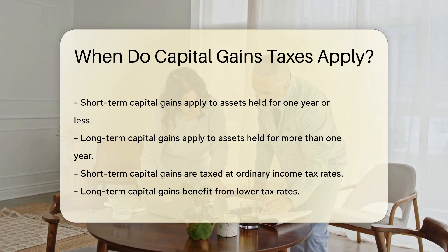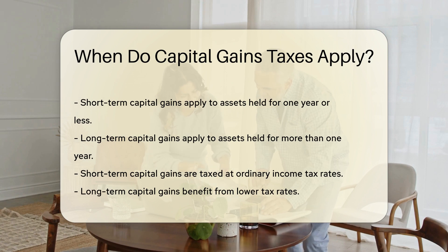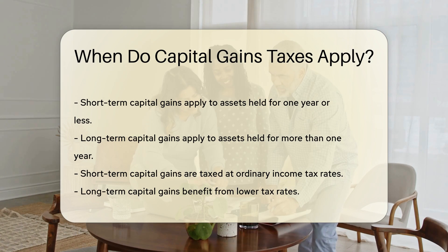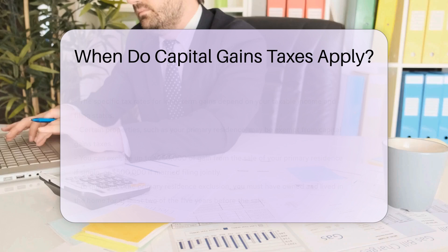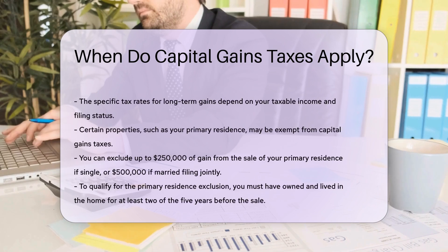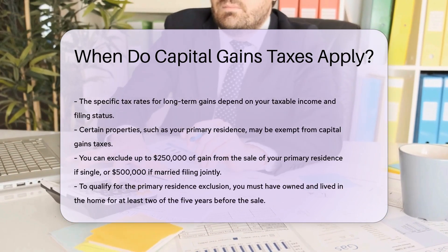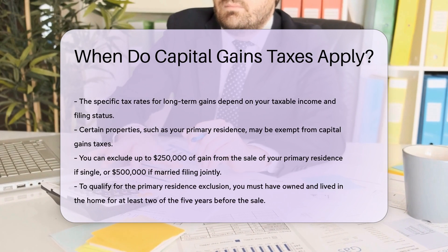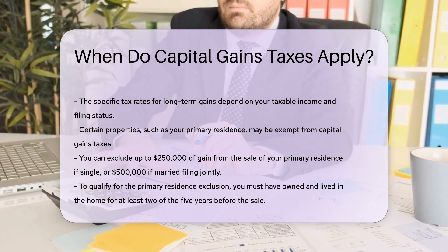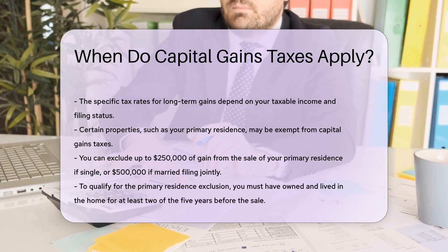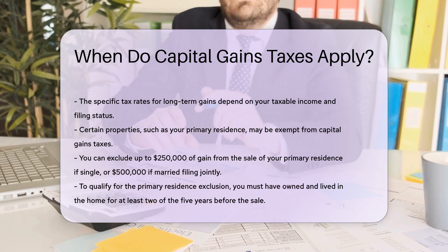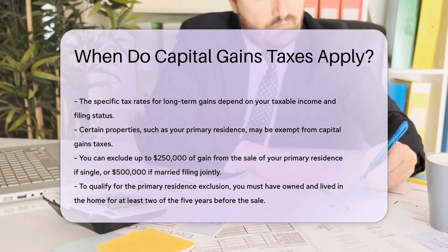Certain types of property are exempt from capital gains taxes. For example, the sale of your primary residence may qualify for an exclusion. You can exclude up to $250,000 of gain if single, or $500,000 if married filing jointly. To qualify for this exclusion, you must have owned and lived in the home for at least two of the five years before the sale.